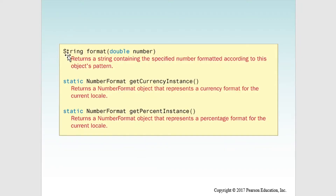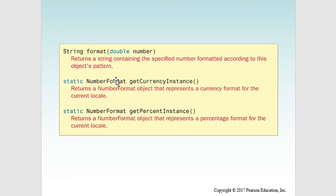Here's the documentation in the book. They show you the format method that takes in a double and returns a string. This method returns a string containing a specified number formatted according to its object's pattern. Then they show two static methods we can use to get the currency formatter and the percent formatter. These two return NumberFormat objects, and we use those formatter objects to format a number to the appropriate pattern.